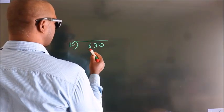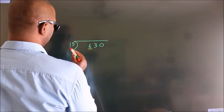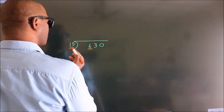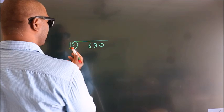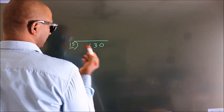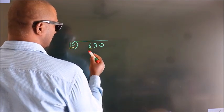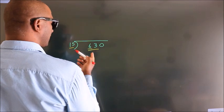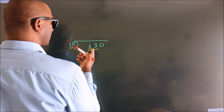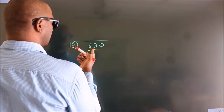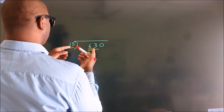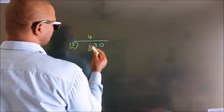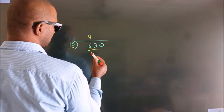Here we have 6, here 15. 6 is smaller than 15. So we should take two numbers: 63. A number close to 63 in the 15 times table is 15 fours, which is 60.